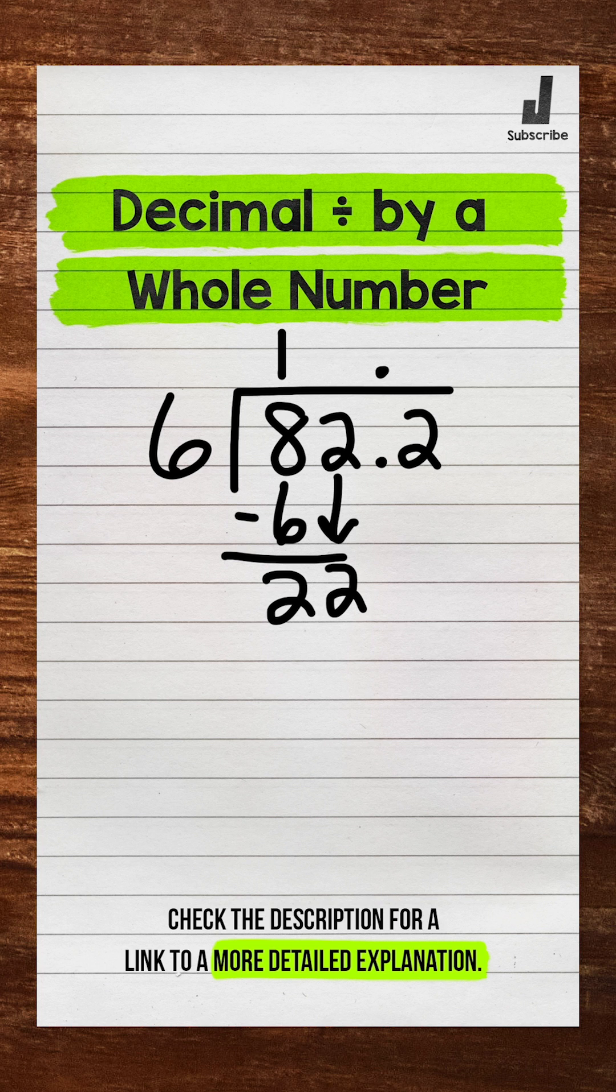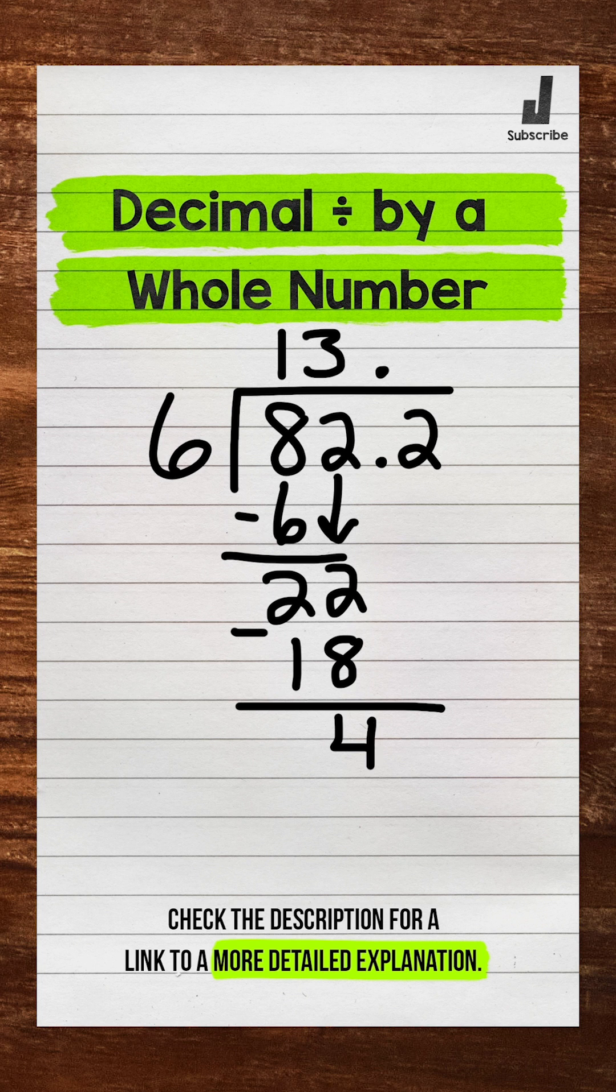And we repeat. We go back to divide. We have 22 divided by 6, which is 3. Three whole groups of 6 in 22. Now multiply. 3 times 6 is 18. Subtract. 22 minus 18 is 4.